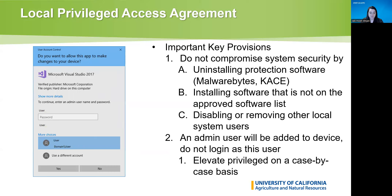There are some important key provisions in the local privilege access agreement. One thing you're agreeing to is that you won't compromise system security by uninstalling protection software. There are two protection software packages installed on your PC or laptop: Malwarebytes, which is our anti-malware and antivirus software, and CASE, which is our asset management software that also helps us manage software. You are also agreeing that you will not install software that is not on the approved software list — items on that list have gone through the necessary vendor risk assessment process, which we are required to do as part of the overarching UC-wide policy.